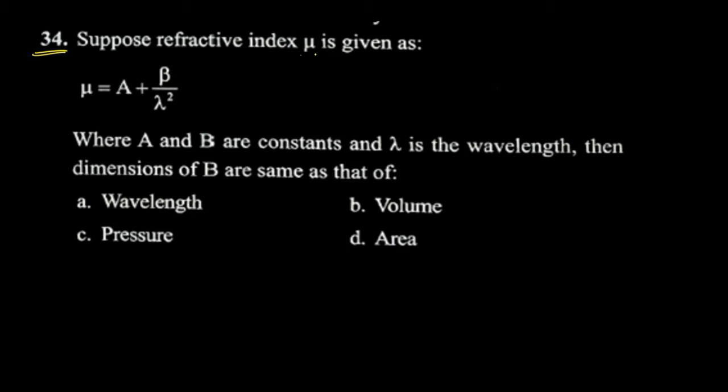So, mu is the refractive index, B is a constant, and lambda is the wavelength. Now, B is what we need to find the dimension of.